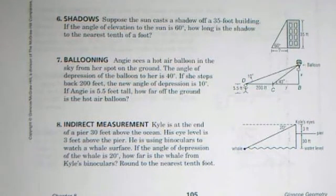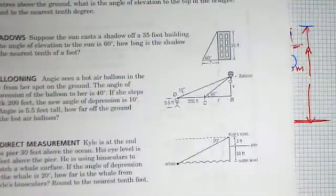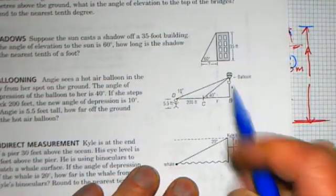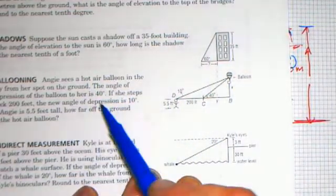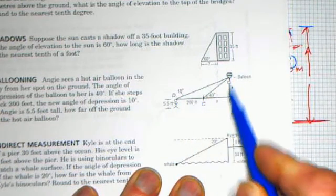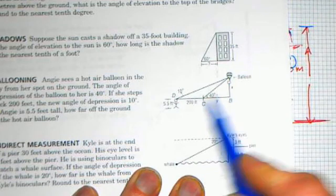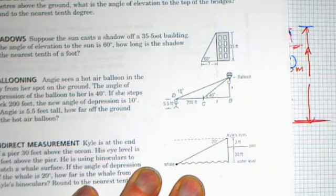We're going to end up having to add the five and a half feet on to the height of the balloon once we find it. So for this one, they actually do give us a diagram to represent the situation. Let's look at that. From the balloon, in the first instance here, the angle of depression is 40 degrees. She moves back 200 feet. So she's y away from the balloon. And she moves back 200 feet. And then the new angle is 10 degrees.